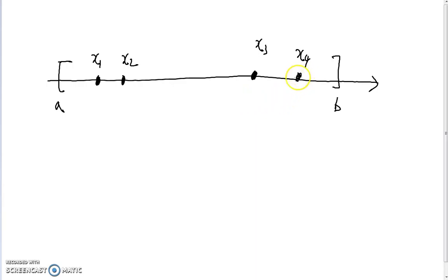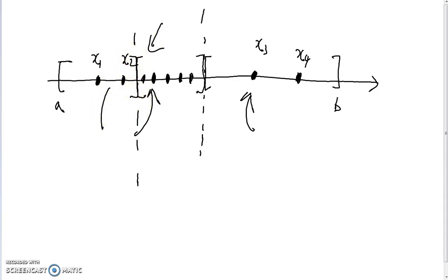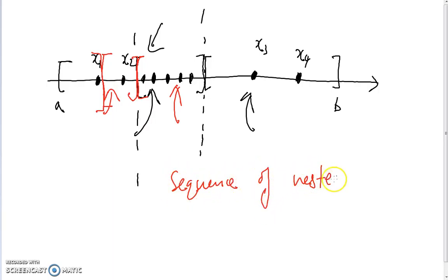We have a sequence inside the interval — x_1, x_2, and so on — and we don't know if it converges or not. We assume it has infinitely many terms. Now let's subdivide this interval into two subintervals. One of these must contain infinitely many points of the sequence, because if both contained only finitely many then the whole sequence would be finite. We pick the subinterval with infinitely many points and subdivide again. By the same argument, one of those subintervals must again contain infinitely many points. Repeating this process creates a sequence of nested intervals.